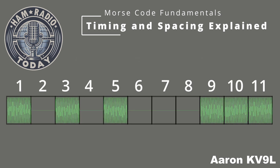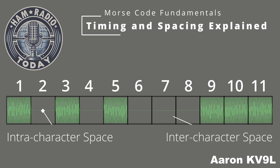Now let's look at the waveform for the letters S and T together. Between the end of the last dit in S and the start of the dah in T, you'll notice a slightly longer pause. This is called the inter-character space. It is the silence between letters within the same word, and it always lasts for three units of time, or a dah. This pause ensures that the letters are distinct, making it easier to decode the message.